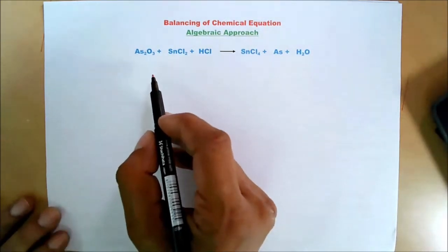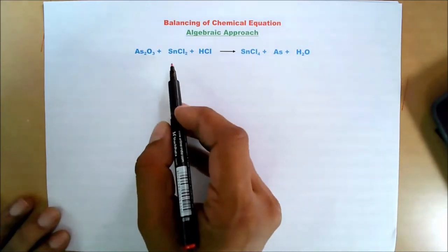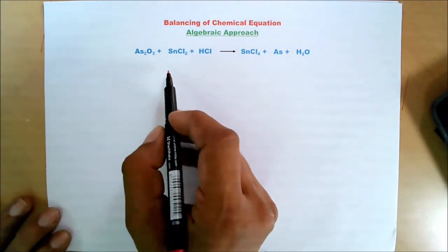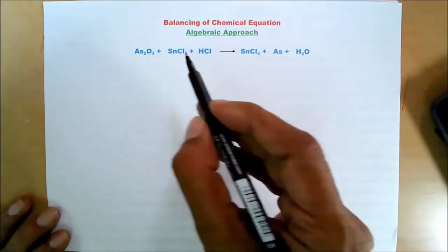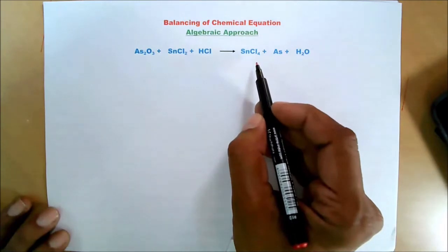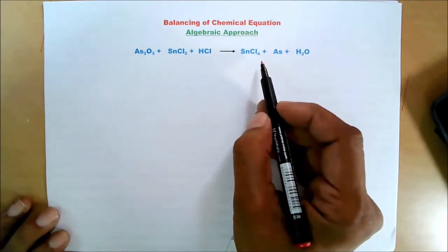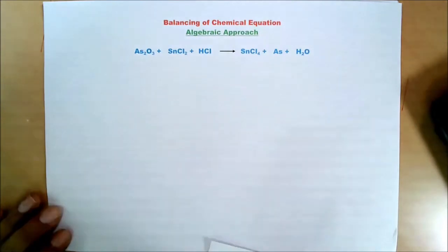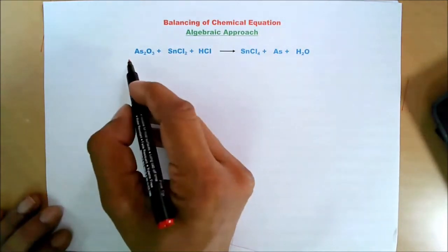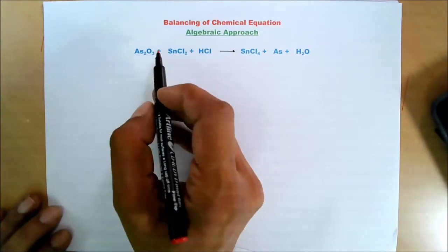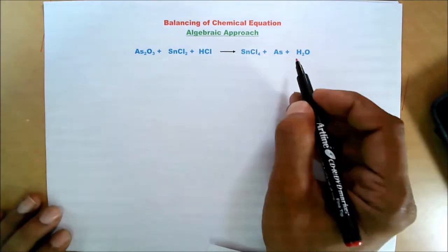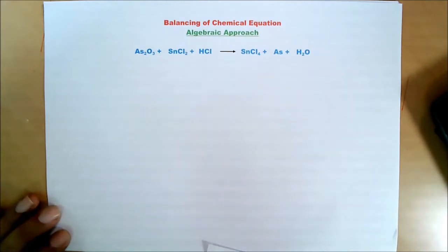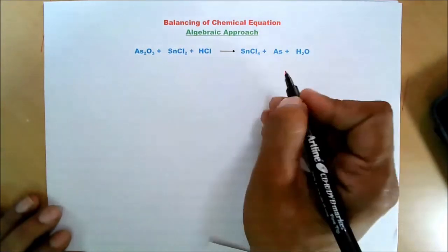My aim is to balance this equation so that the number of atoms of each element on the left-hand side becomes equal to the number of atoms of that particular element on the right-hand side. I have seen that there are coefficients like 1, 2, 3, 4 before these compounds. So in an algebraic approach, I can write — since I don't know what those coefficients are —